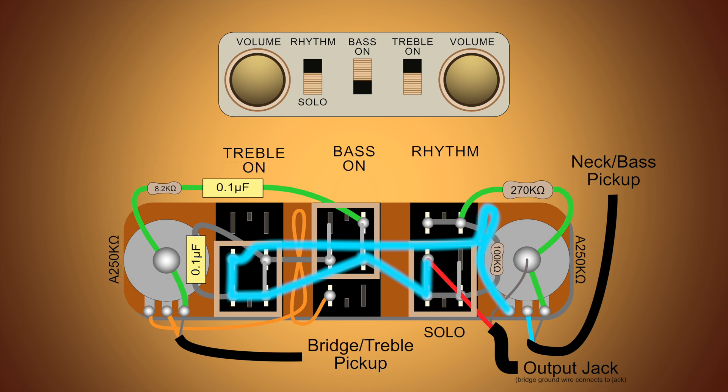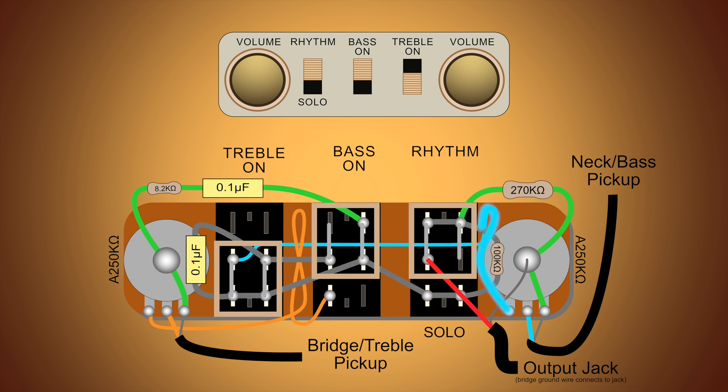And to wrap up with the neck pickup, let's flip the rhythm switch to on. Again, the same long path, but now with a side trip to the same resistor and ground path as the bridge signal, and then finally to the output.